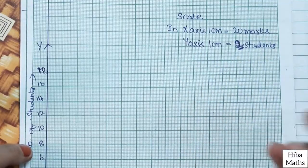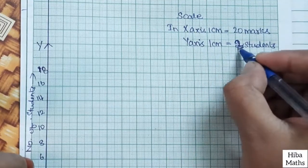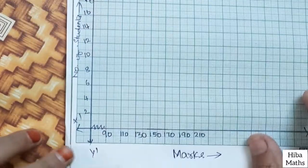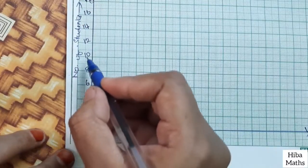Y-axis is 1 cm equals 2 students. 2, 4, 6, 8, 10, 12.